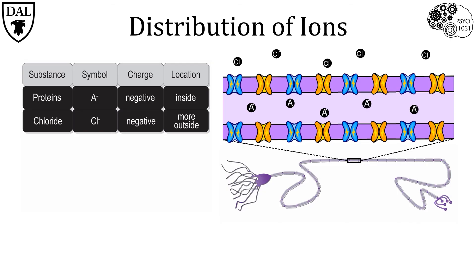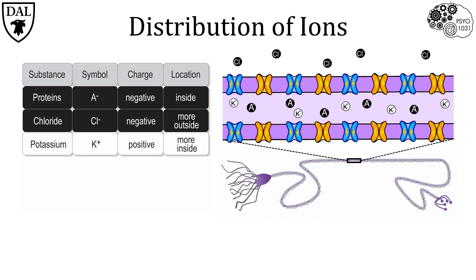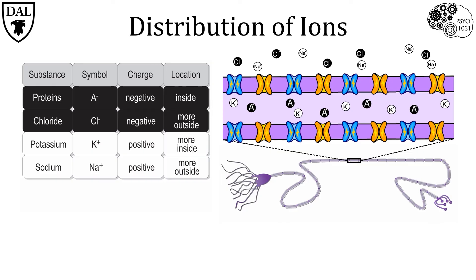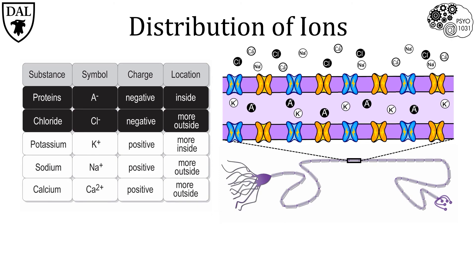Now let's look at some of the major positively charged ions. First, potassium is a positively charged ion represented by the symbol K⁺, and found mainly inside the neuron. Unlike potassium, positively charged sodium, represented by the symbol Na⁺, is found mostly outside the neuron. Lastly, calcium or Ca²⁺ carries a double positive charge and is more abundant outside of the neuron.